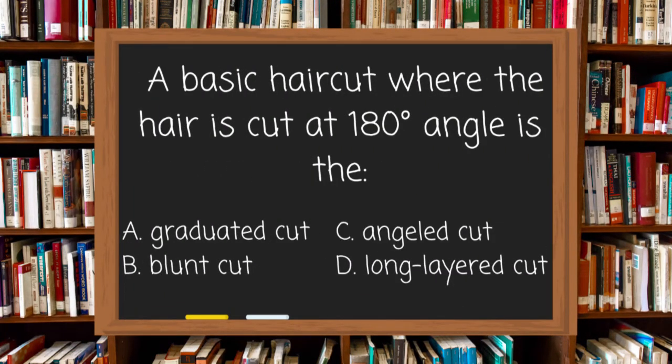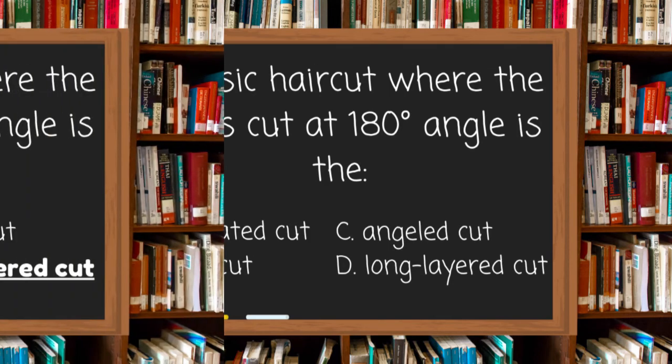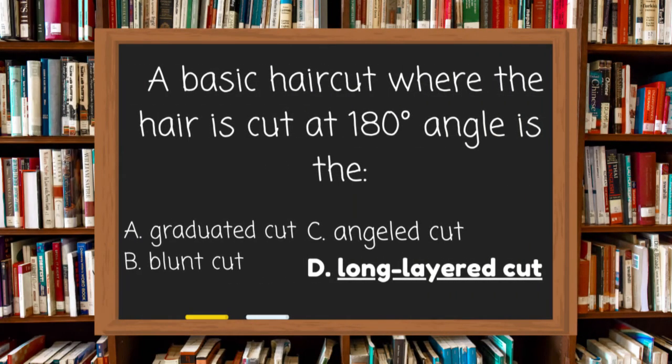A basic haircut where the hair is cut at a 180-degree angle is the: A. Graduated cut, B. Blunt cut, C. Angle cut, or D. Long layered cut. The answer is D, long layered cut. Remember, long layered is 180 degrees.